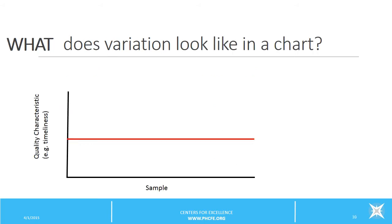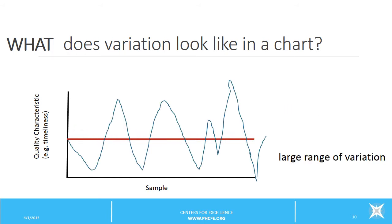So briefly, let's look at what variation looks like in a chart. Your data might have a small range of observed variation, shown here in this very simple graph. Or, your data might have a large range of observed variation that would look something like this in your chart.